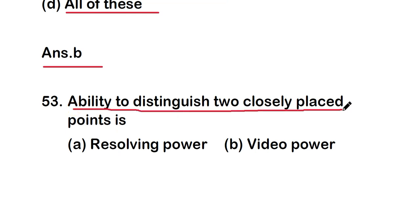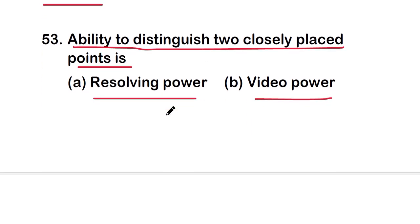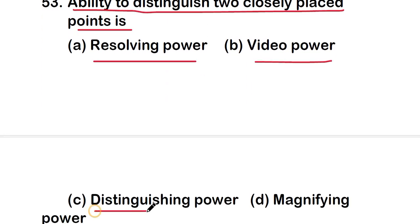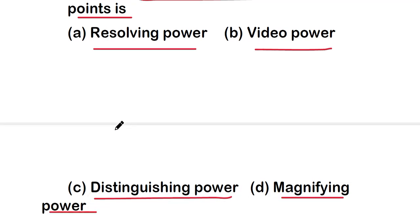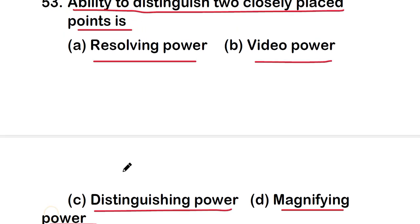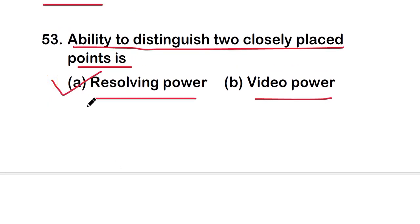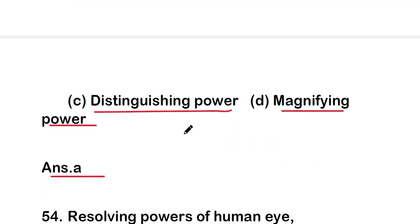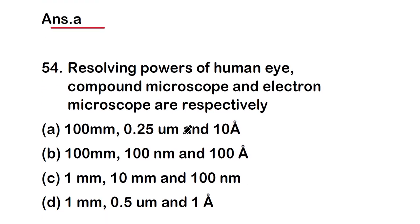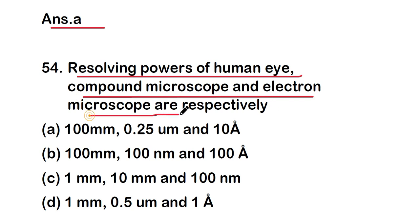Next question: the ability to distinguish two closely placed points is — resolving power, video power, distinguishing power, or magnifying power? The right answer is option A — resolving power. Resolving power is the ability to distinguish two closely placed points.